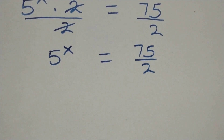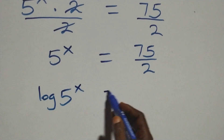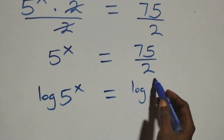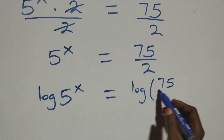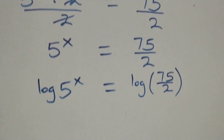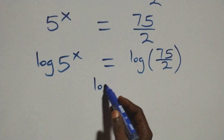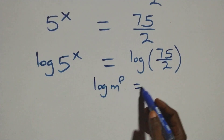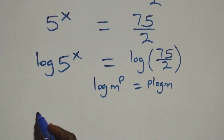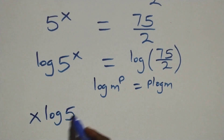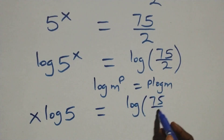The next step: we take the log on both sides. We have log(5^x) equals log(75/2). From here we apply the power rule of logarithms: when we have log(m raised to power p), this is the same thing as p·log(m). So this becomes x·log 5 equals log(75/2).